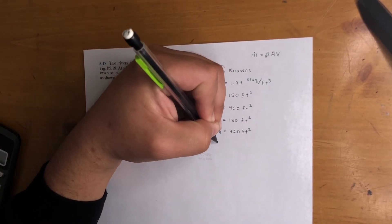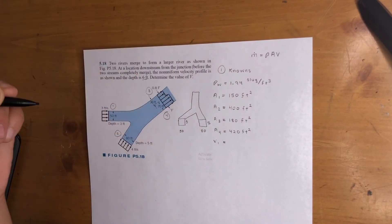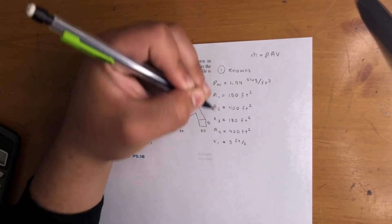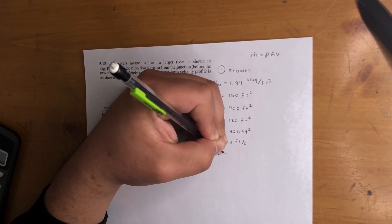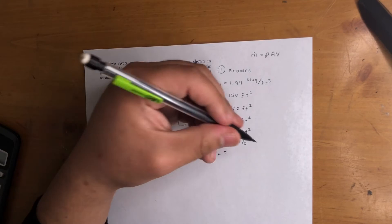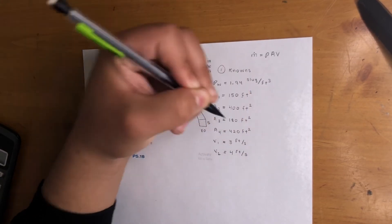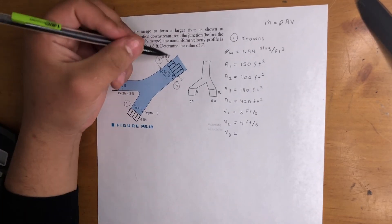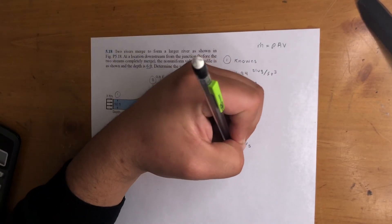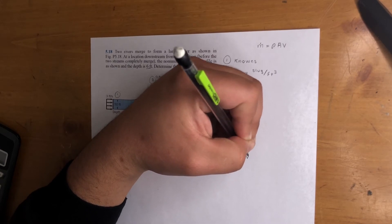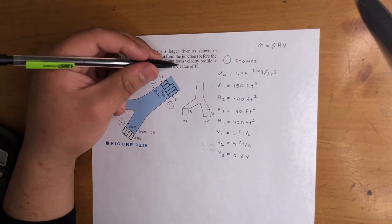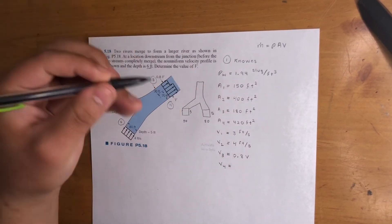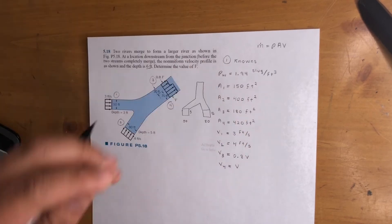So velocity at one, they give it to us, that is 3 feet per second. That's easy. Velocity of two, they give it to us, that is 4 feet per second. Velocity of three, that is right here, 0.8V. So that's kind of what we're looking for, right? The whole problem says find velocity, determine the value of V. And then V4, that is just V.